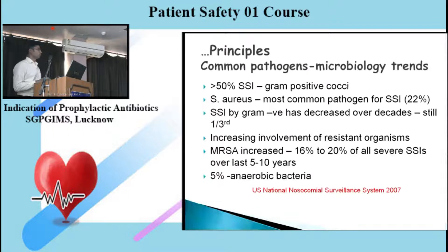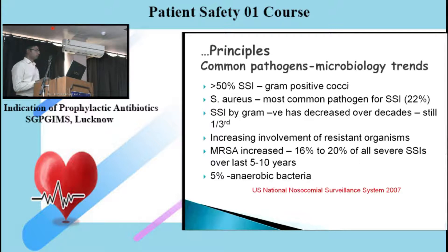Because of indiscriminate use of various antibiotics, resistant organisms are growing. MRSA, which was around 16% of total gram-positive SSIs, has increased to 20% of all severe SSIs over the last 5 to 10 years. About 5% of all infections are caused by anaerobic bacteria, which is more common in colorectal cases.